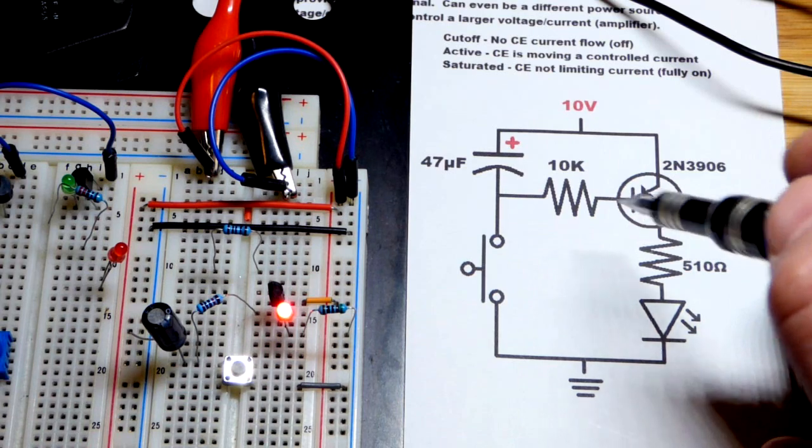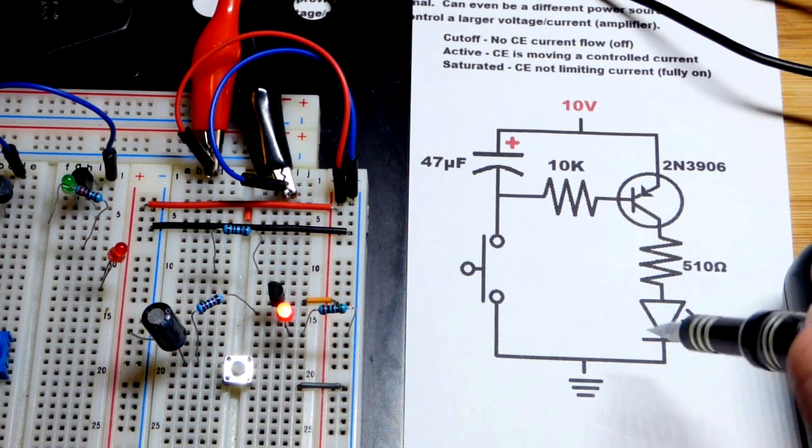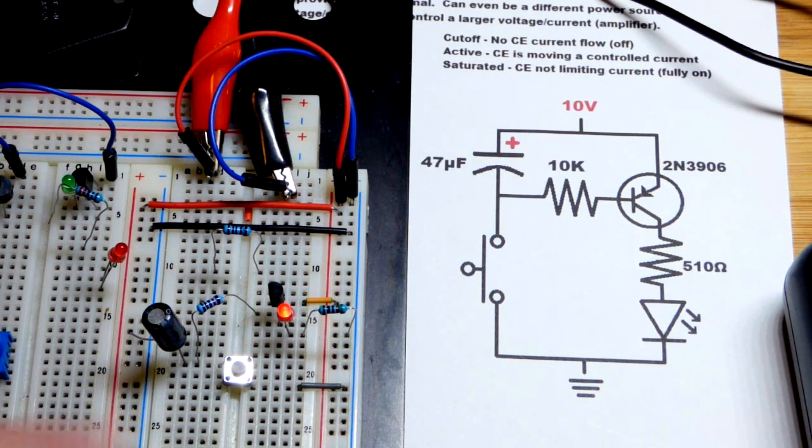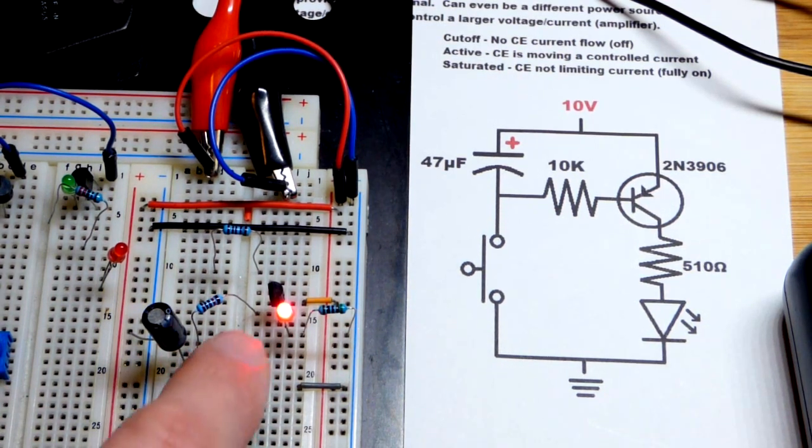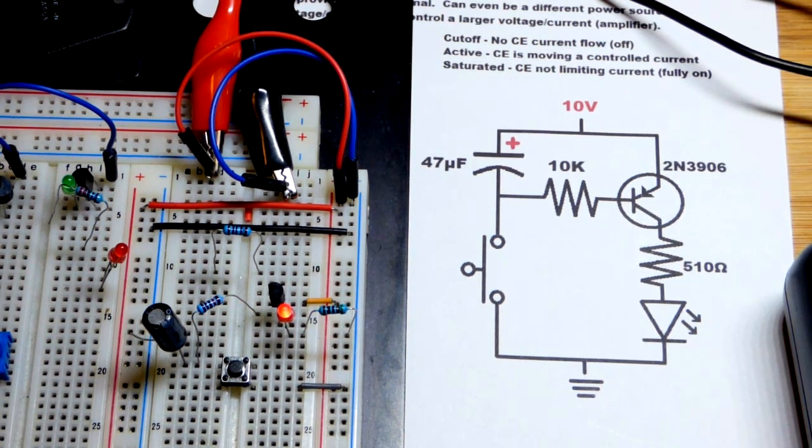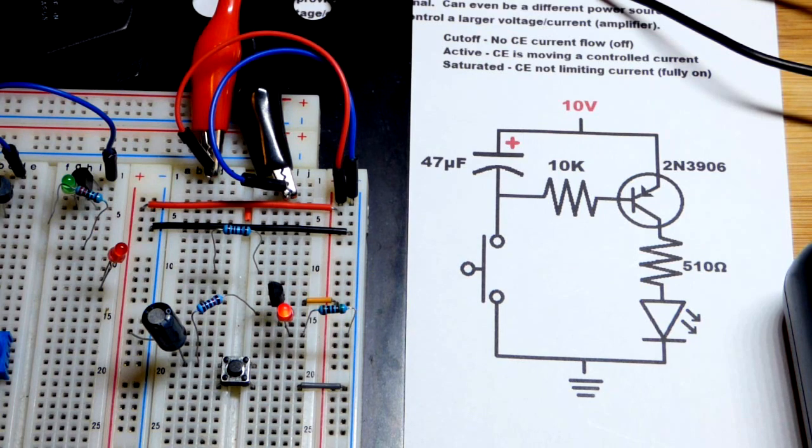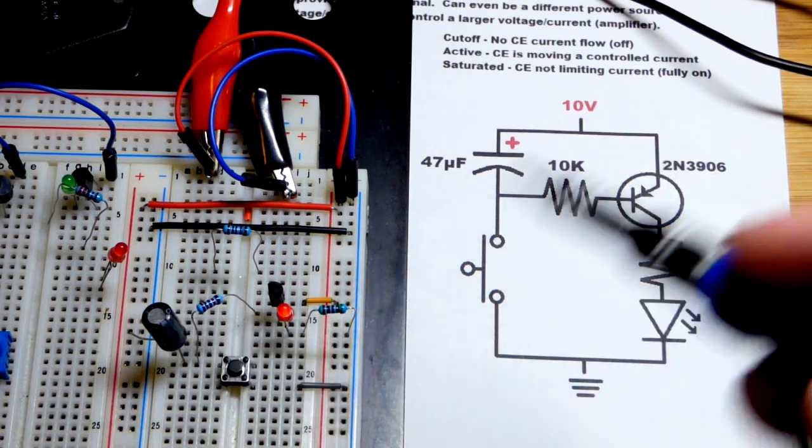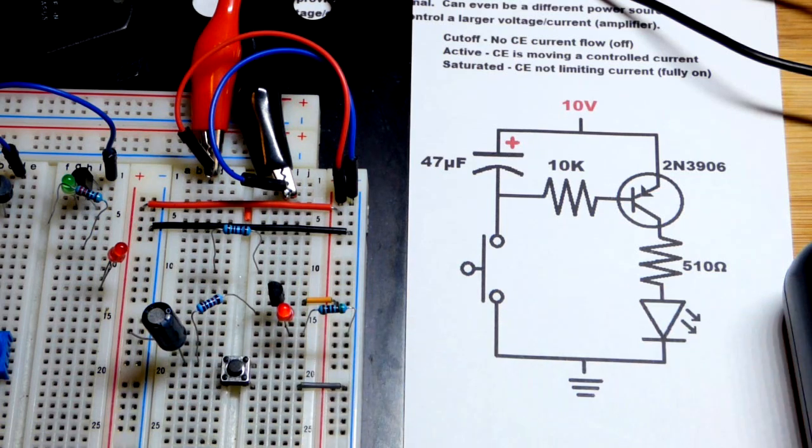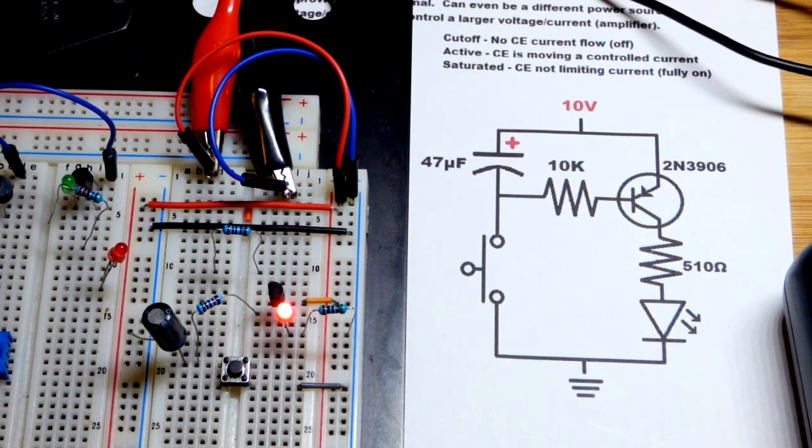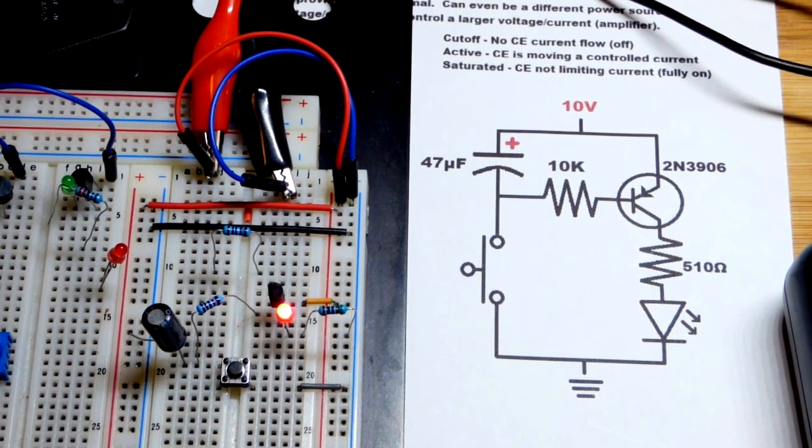But once the current gets low enough, depending on its gain, the load will have less current. But the main takeaway is it fades. We could use a higher value capacitor - it would extend the time that all of this takes. But it's an interesting addition. People seem to like - I made a couple fadeaway videos before, they seem to get more than an average view. So I figured I would add that onto here to help demonstrate this a little bit more.